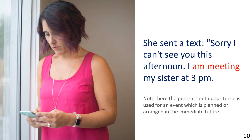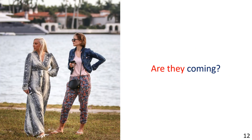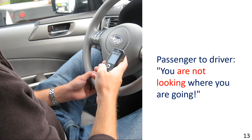In the picture we see two people lying on the grass in a park. Example: It is a hot afternoon and we are relaxing in the park. Next, in the picture we see two women waiting — Are they coming? And finally, in the picture we see a person texting while driving. Example — Passenger to driver: You are not looking where you are going.